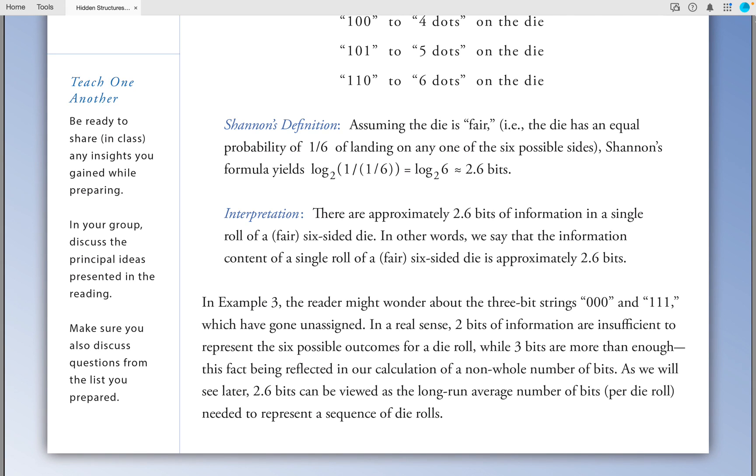In Example 3, the reader might wonder about the three-bit strings 000 and 111, which have gone unassigned. In a real sense, two bits of information are insufficient to represent the six possible outcomes for a die roll, while three bits are more than enough. This fact being reflected in our calculation of a non-whole number of bits. As we will see later, 2.6 bits can be viewed as the long-run average number of bits per die roll needed to represent a sequence of die rolls.